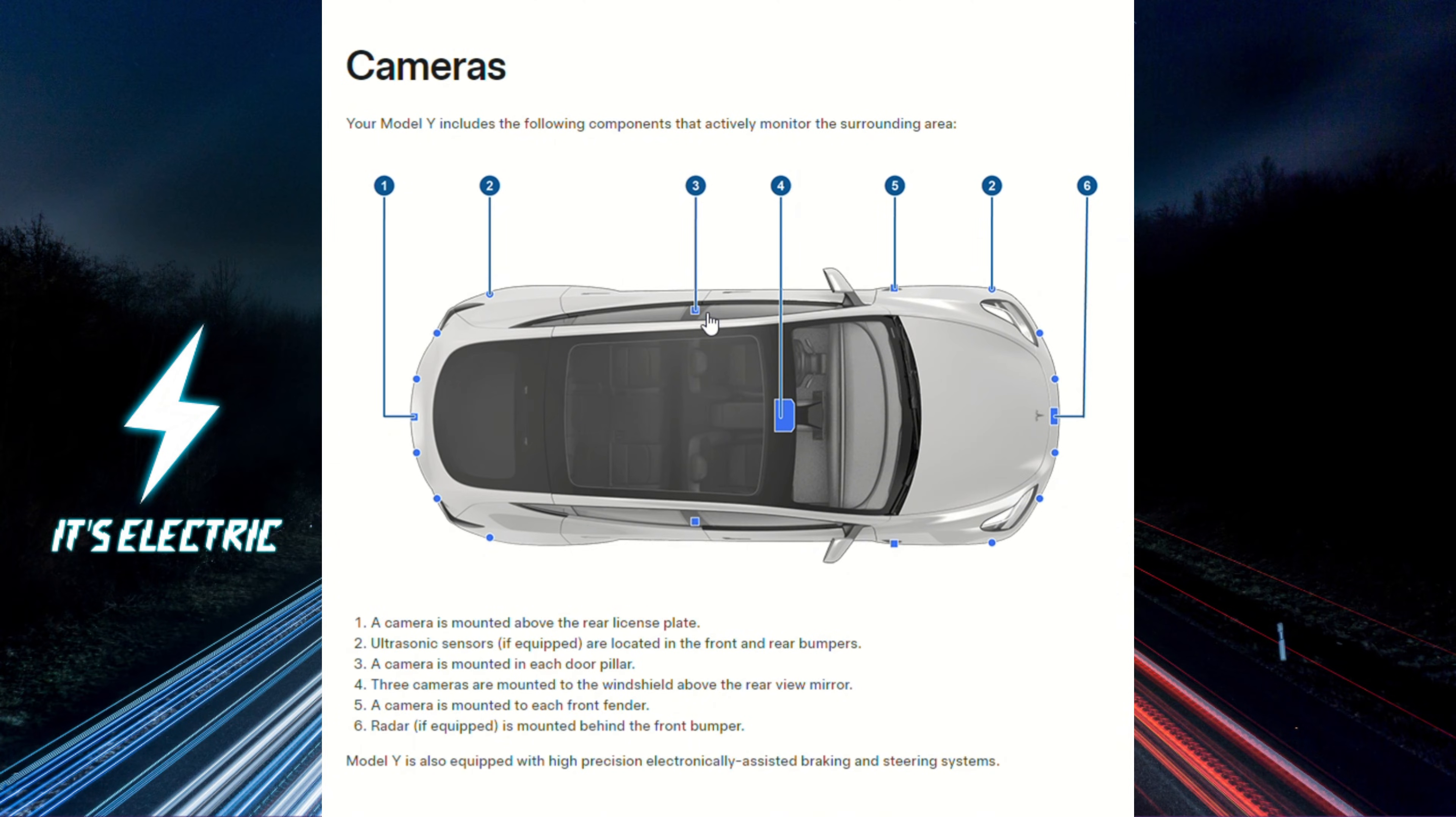Three cameras are mounted to the windshield above the rearview mirror. A camera is mounted to each front fender. Radar, if equipped, is mounted behind the front bumper.